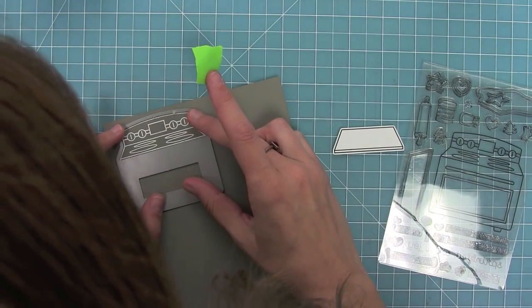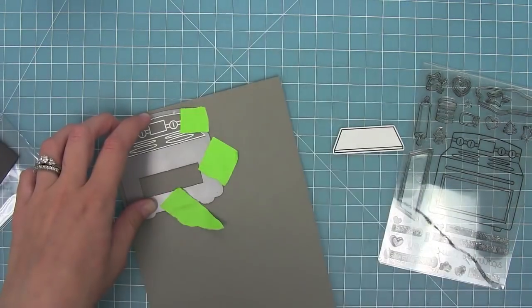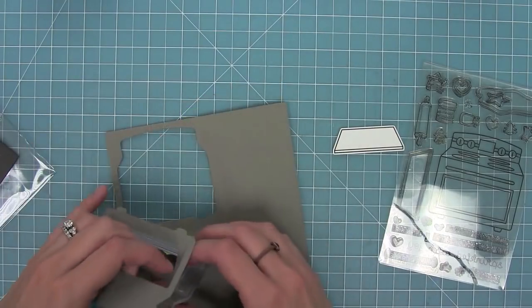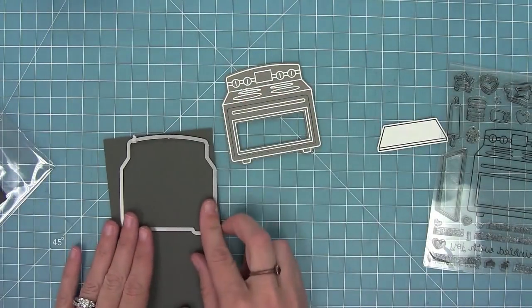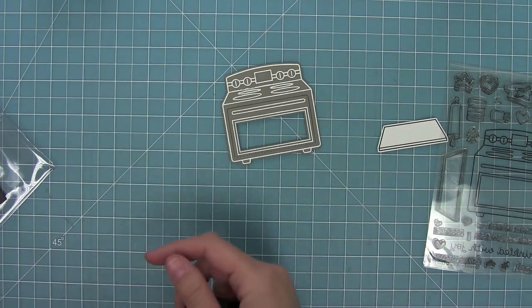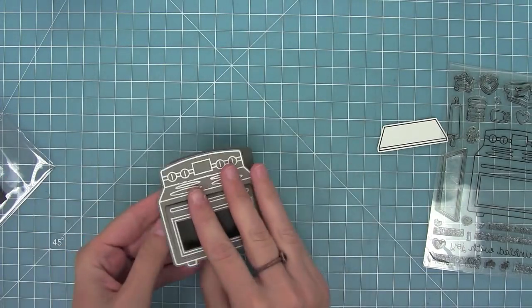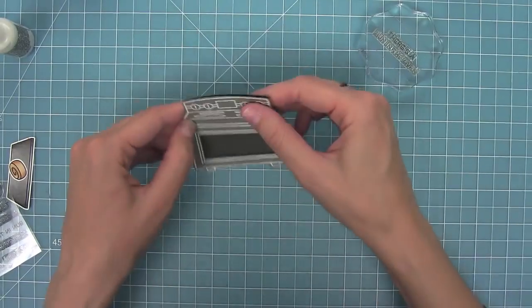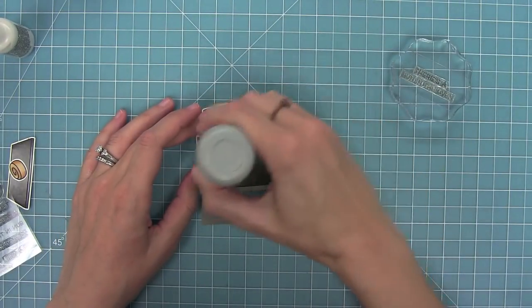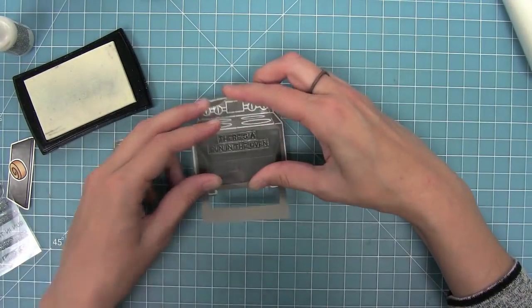Now that that's all white heat embossed, I'm going to take the interactive add-on die for Sprinkle with Joy and line that up with the oven. When it cuts that oven it cuts an opening and makes it interactive. Then I'm taking some storm cloud cardstock and cutting it with the main die for the oven. When you layer those two together you get this really cool interactive oven with a nice dark inside.